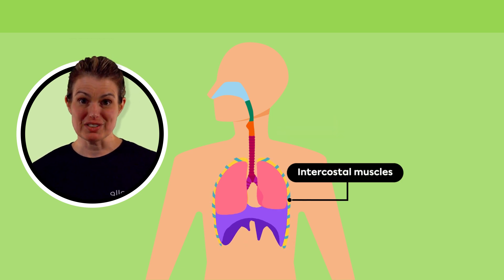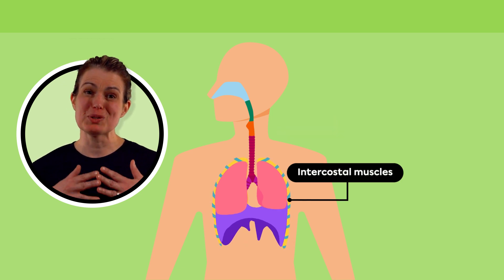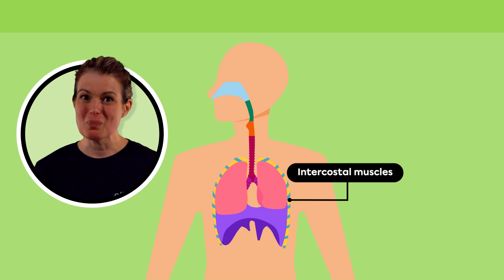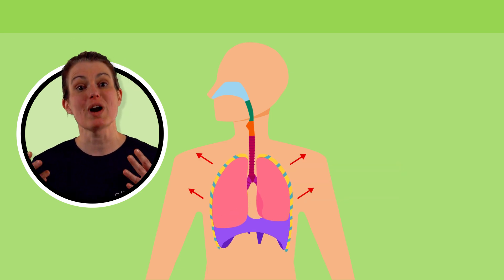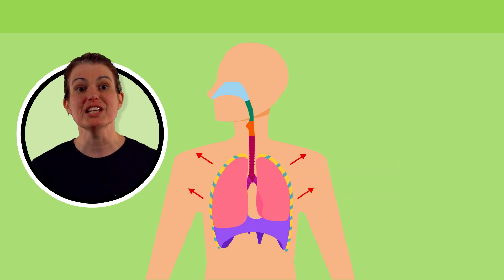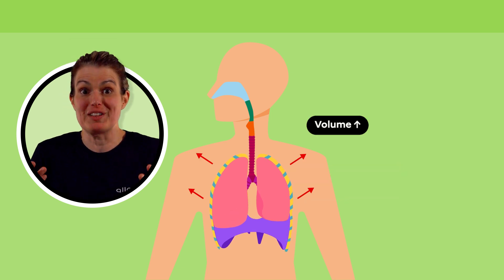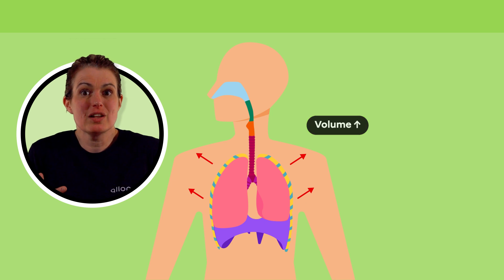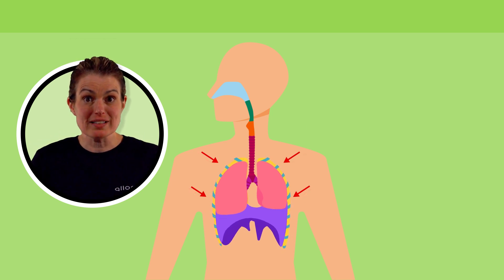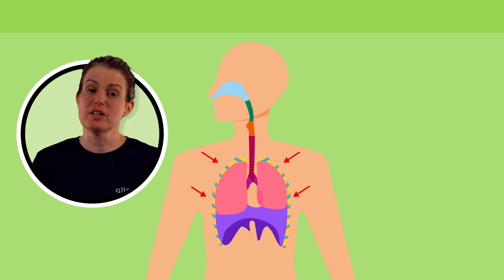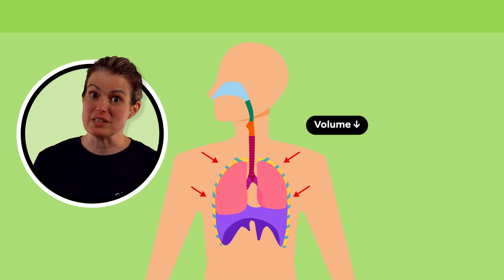The intercostal muscles are the muscles between the ribs. When they contract, the ribcage rises, which increases the volume of the lungs. On the other hand, when the intercostal muscles relax, the volume of the lungs decreases.